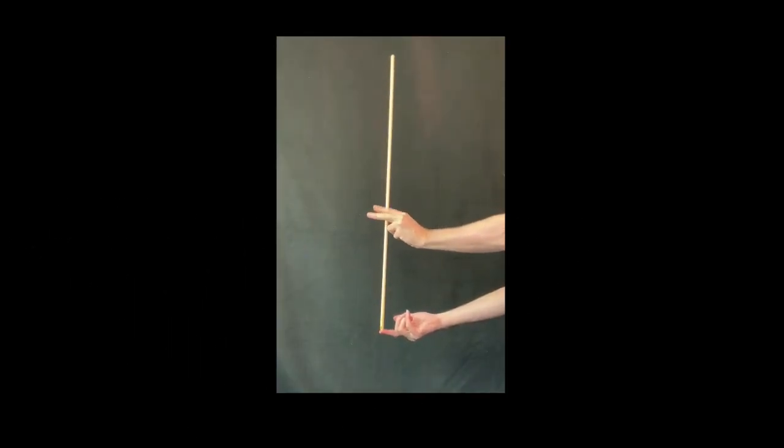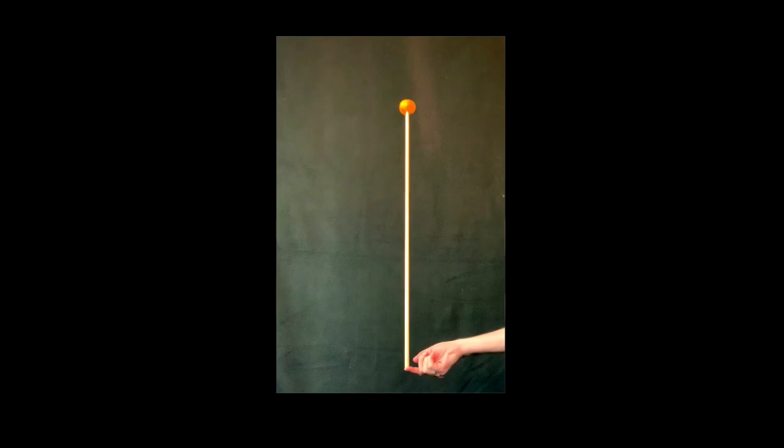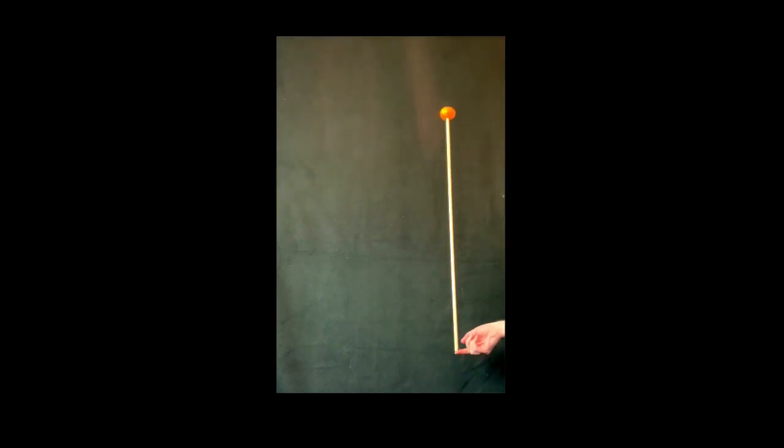Balancing a stick on your finger might be a challenge, but put something heavy on the top, such as an orange, and it's much easier. Why is that?